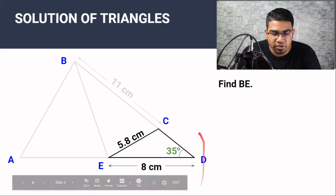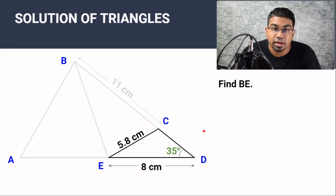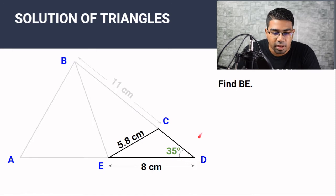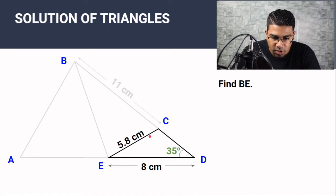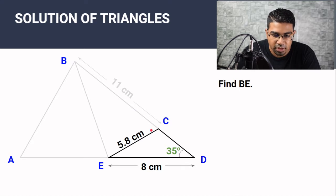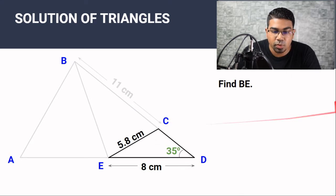From triangle CED, the information that would be useful in order to find BE is to find this angle here. Once we get this angle, we can also find the adjacent angle. So in order to get this angle, we have to use the sine rule.